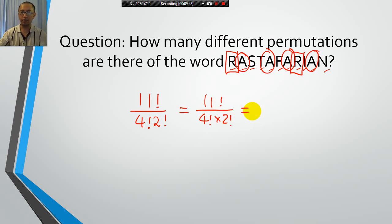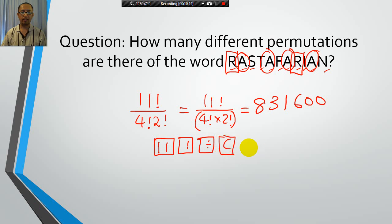So, if you type that into your calculator, then that should give you, eight, three, one, six hundred. Eight hundred and thirty-one thousand six hundred. Make sure when you type this in the calculator, you put the bottom part of the fraction in brackets. So, you put in eleven factorial, divided by, bracket, four factorial, times two factorial, bracket, equals. So, that's how you put it into the calculator.